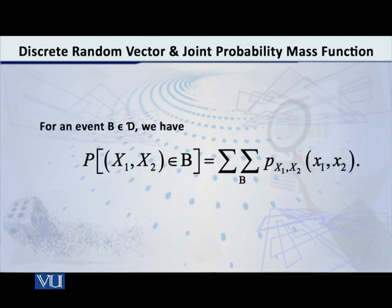If we are interested in a particular event, if we are interested in finding the probability that the random vector X1, X2, belongs to a space capital B, which is a subspace of the big space capital D, then how will we compute the probability of this event?